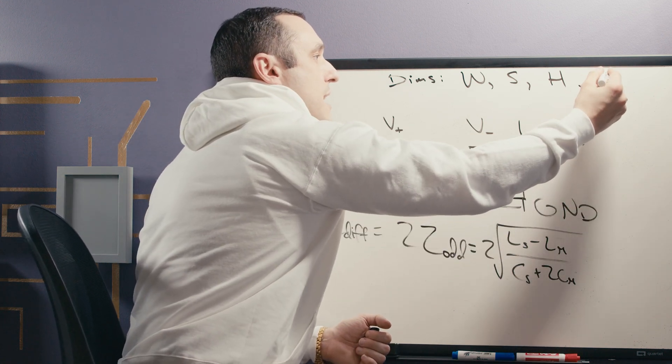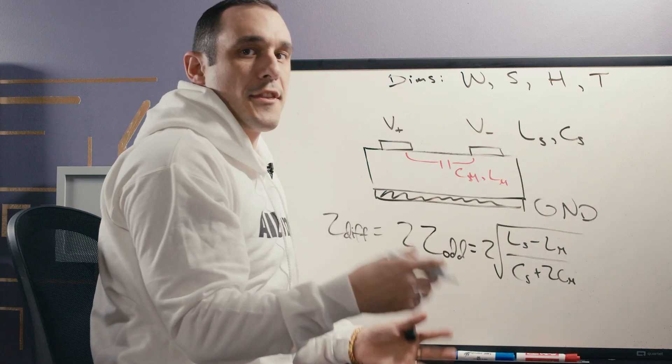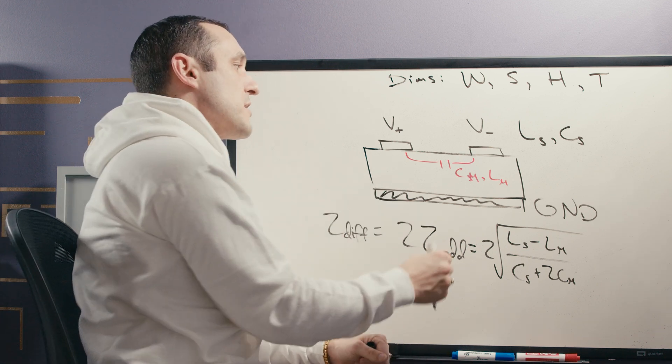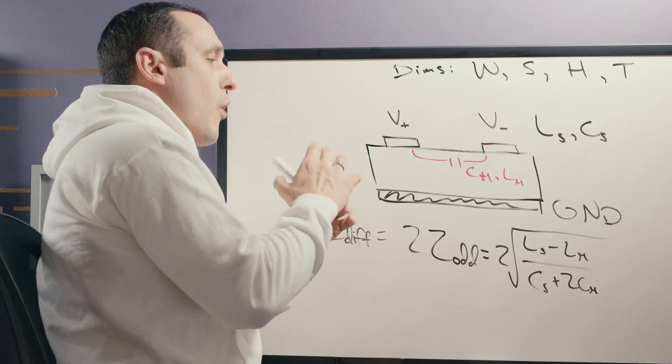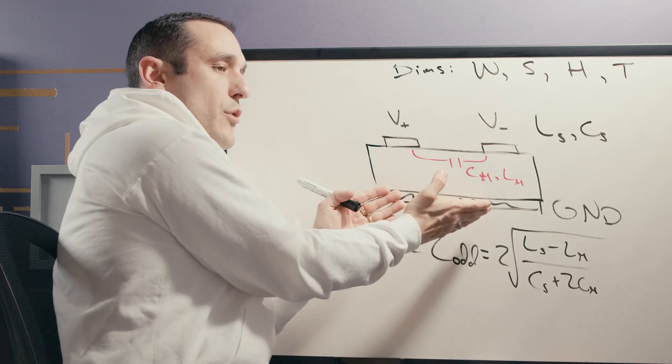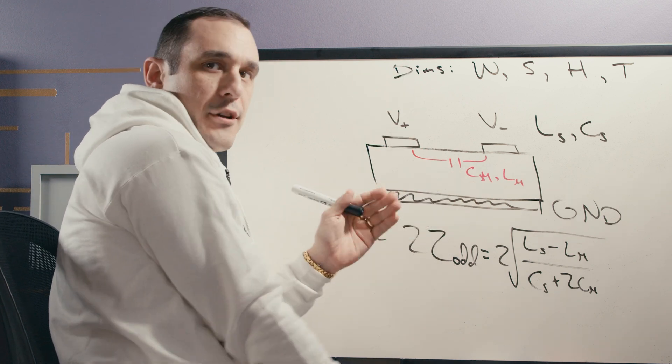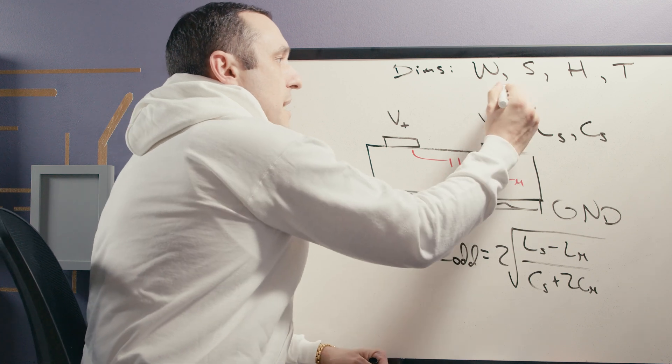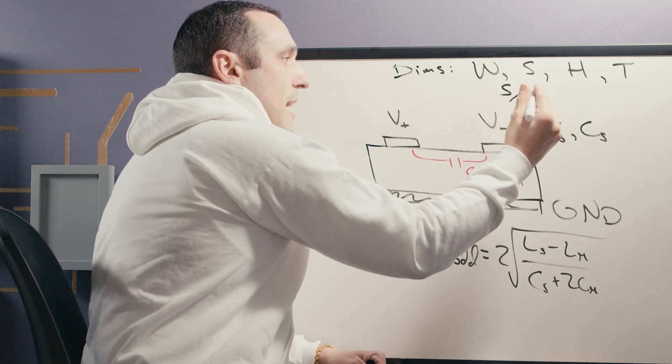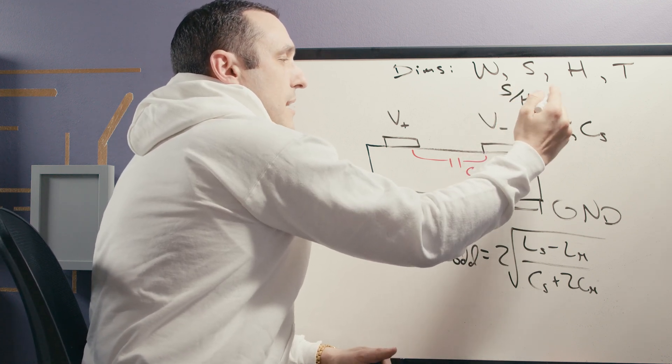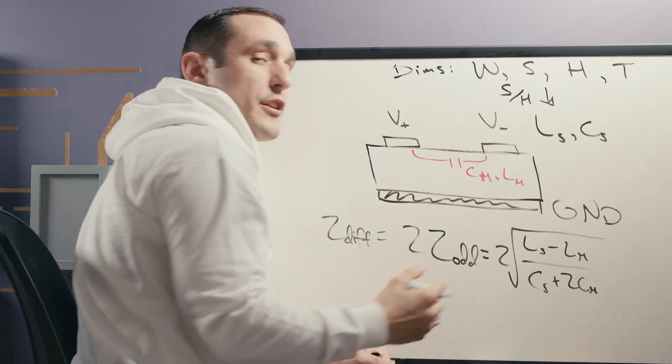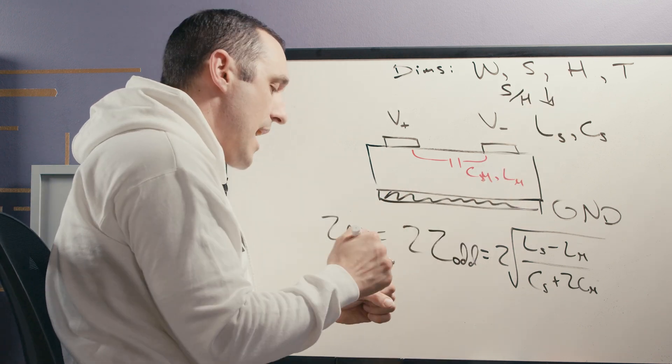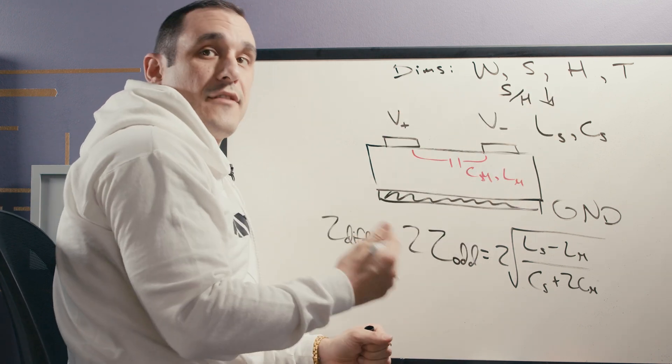What happens if we were to take the ground plane and move it very far away? Or in other words, we were to let's say take the spacing over height value and we were going to make that value very small by increasing the height or by making the spacing very small.